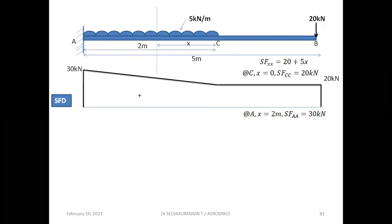How to find shear force values without writing an expression: up to C you have 20 kilonewton. The UDL is 5 kilonewton per meter over run length 2 meters, so 5×2 = 10. Both 20 and 10 are acting downward — summing gives 30 kilonewton at A. You can calculate without writing any expression, but writing the expression makes it easy to cross-check answers.